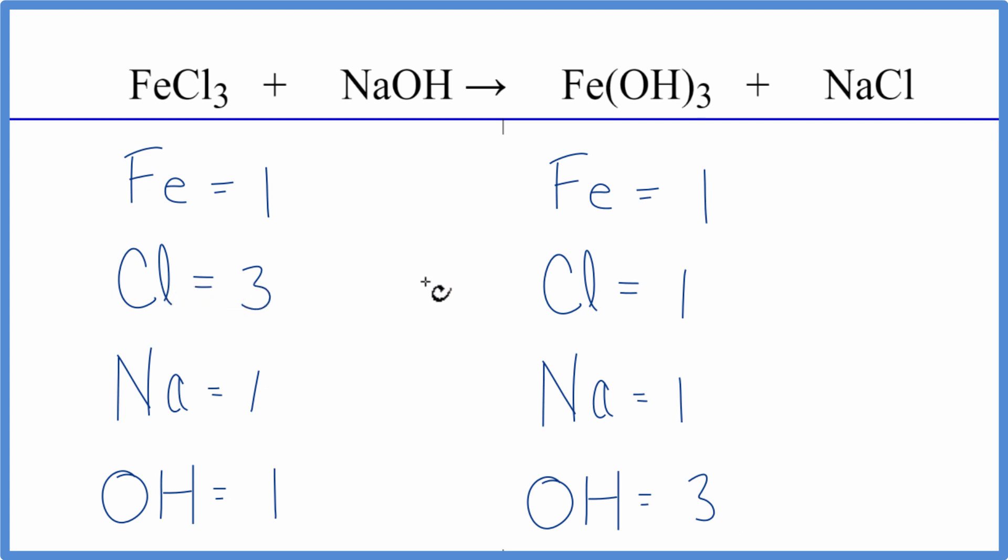I can see right away I need to balance my chlorines, put a coefficient of three in front of the NaCl. So I have one chlorine times three. That gives me three of those. The chlorines are balanced. And one sodium times three, that gives me three sodiums.